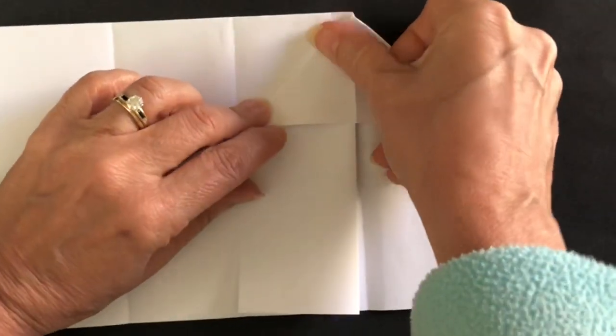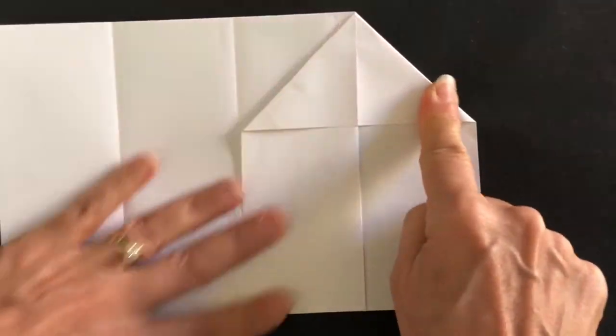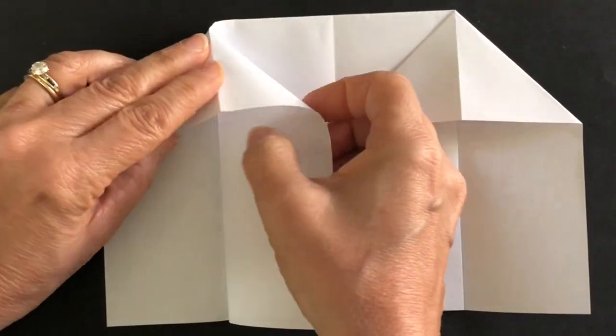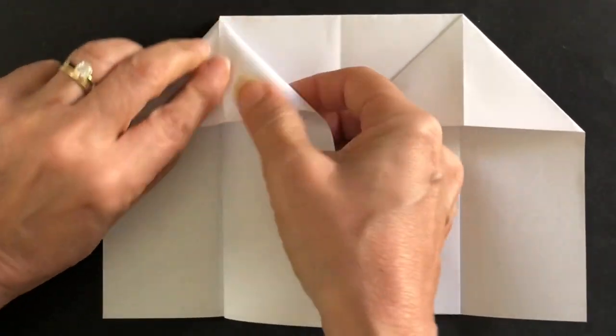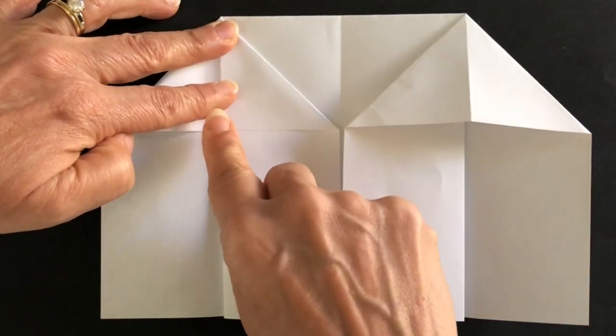You'll see a little roof forming right here on one side and you'll do the same thing on the other side. Just force it over, try to keep a nice point at the top and then go ahead and press down.